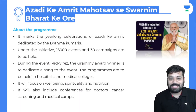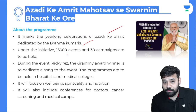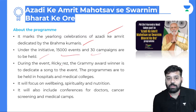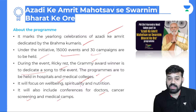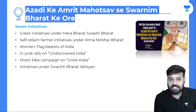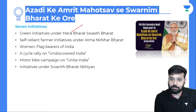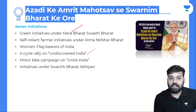About the program: it marks a year-long celebration of Azadi Ke Amrut, dedicated by Brahma Kumari. Under the initiative, 15,000 events and 30 campaigns are to be held. Grammy Award winner Ricky Kej is to dedicate a song to the event. Programs are to be held in hospitals and medical colleges, focusing on well-being, spirituality, and nutrition. There are seven initiatives: Green Initiative under Nir Bharat, Swasth Bharat, Self-Reliant Farmer Initiatives under Atmanirbhar Bharat, women's flag bearers of India, a cycle rally on undiscovered India, a motorbike campaign on Unite India, and initiatives under Swachh Bharat.